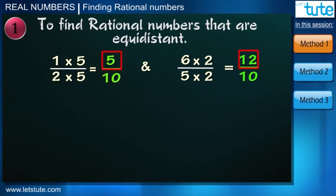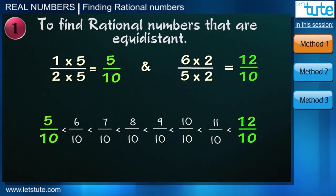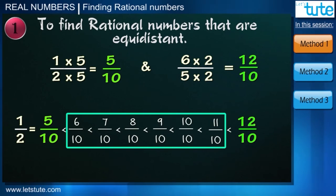So we'll write numerator in increasing order. And these are some rational numbers between the fractions 1 upon 2 and 6 by 5. So friends, like this you can take any two fractions and can find the rational numbers between them.